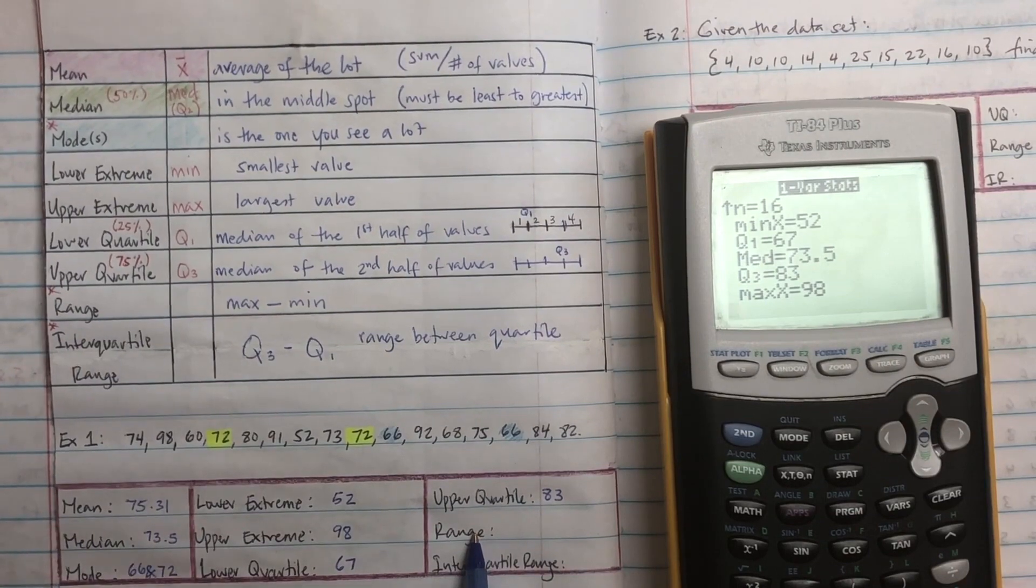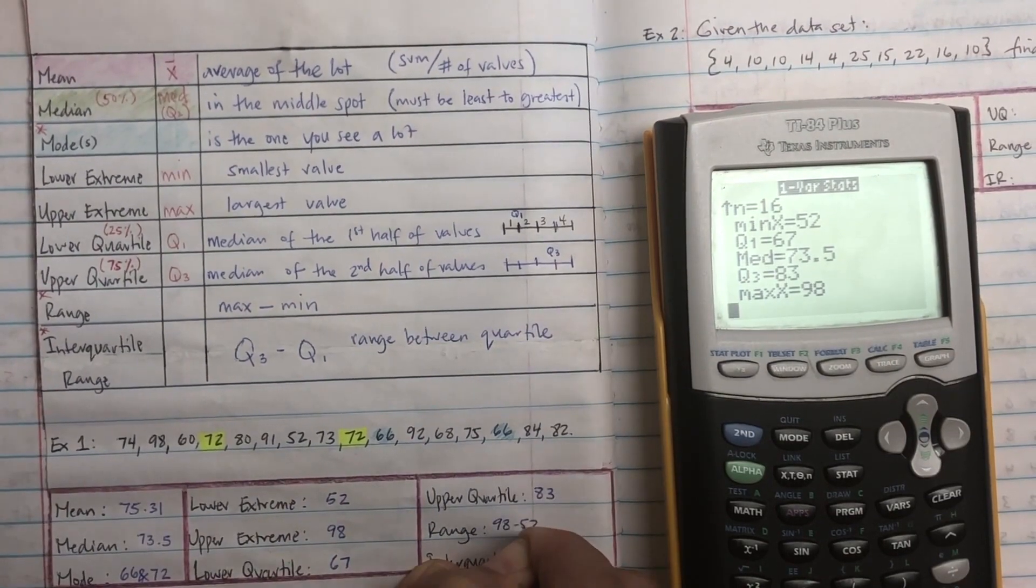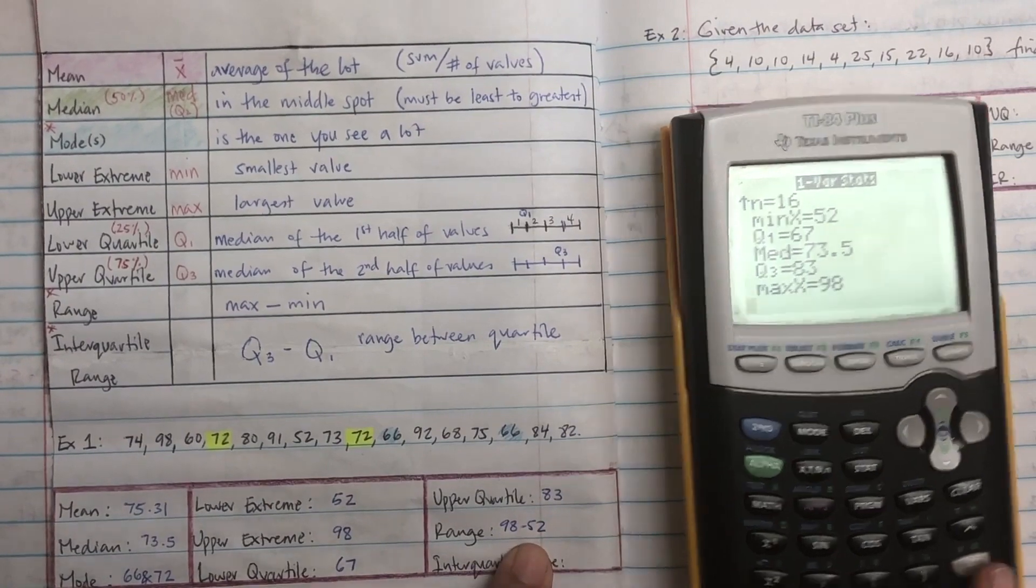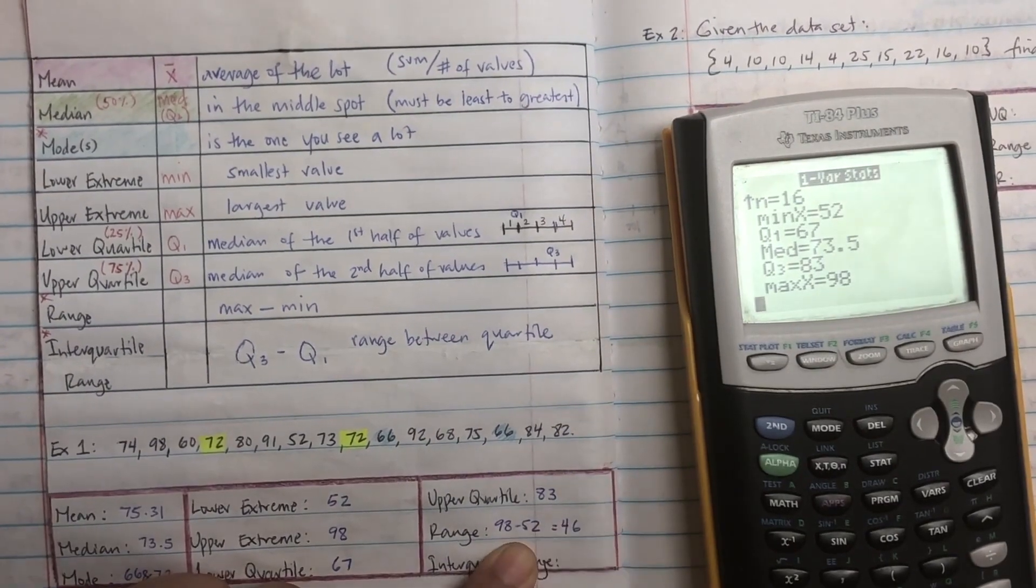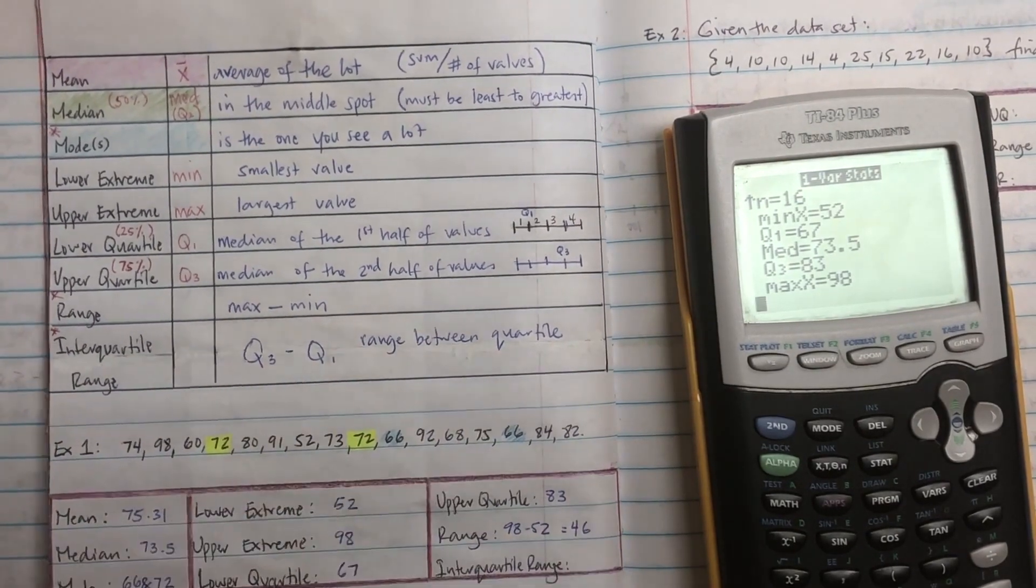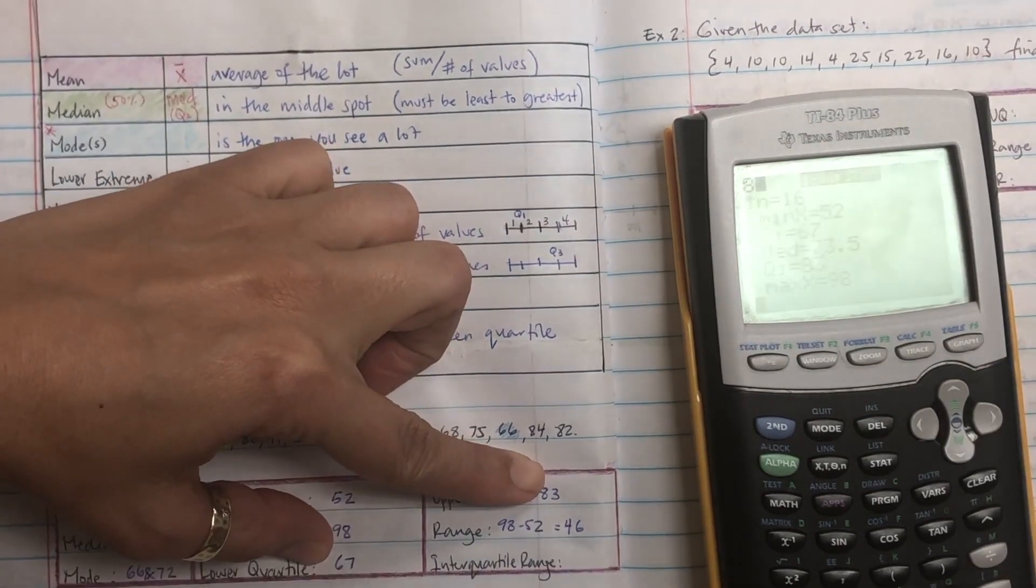And then the range is when you take the upper extreme minus the lower extreme, so 98 minus 52, and you get 46. And finally, interquartile range is when you take Q3 and you subtract Q1. So that's going to be 83 minus 67.